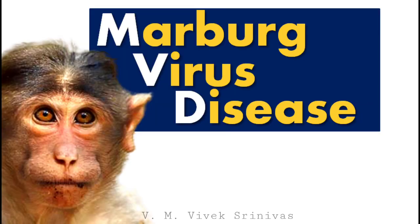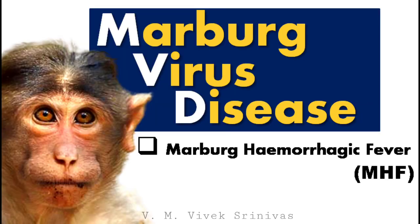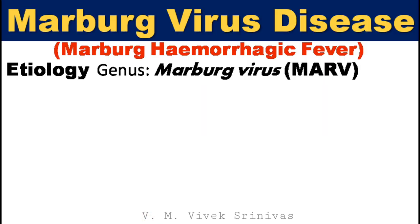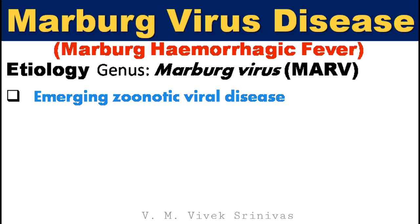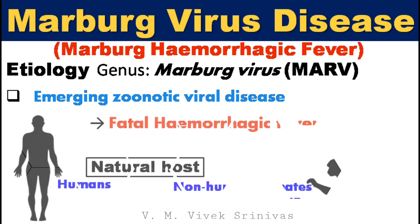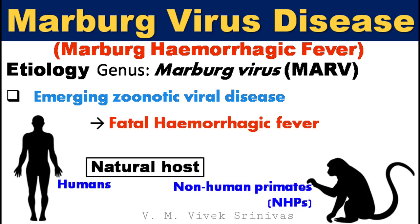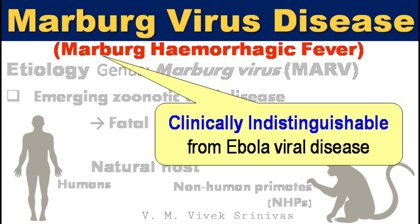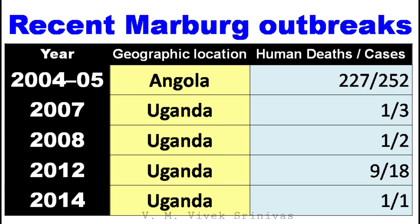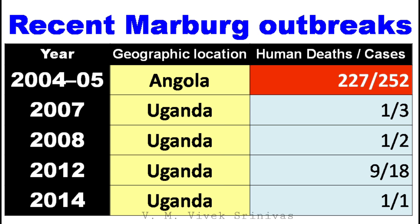Marburg virus disease — the other name for this viral infection is Marburg hemorrhagic fever. This disease is caused by the genus Marburgvirus. This is also an emerging zoonotic viral disease characterized by fatal hemorrhagic fever affecting humans and non-human primates. Except for the causative agent, this infection is clinically indistinguishable from Ebola viral disease. The highest human death toll due to Marburg virus was documented in the 2004–2005 outbreak in Angola, Africa.